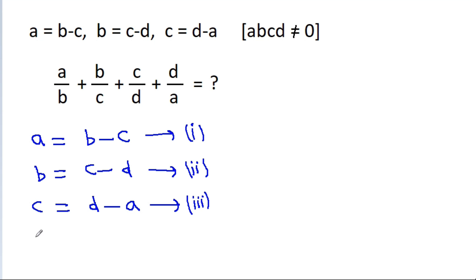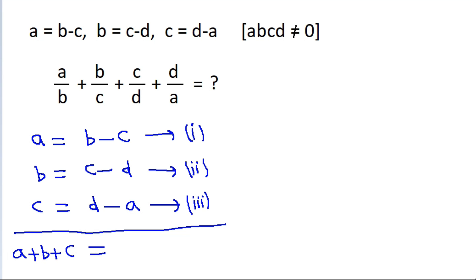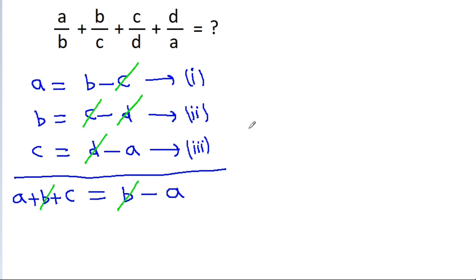Now, if we add these 3 equations, then we get a plus b plus c is equal to — here minus c and c will get cancelled, and minus d and d will get cancelled, and we get b minus a. And b and b will get cancelled, so we get a plus c is equal to minus a, or c is equal to minus 2a.